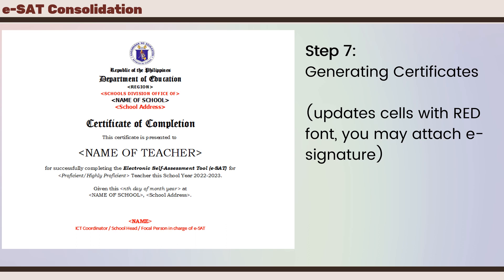The next step is to generate the certificates. If you did not click Yes earlier on the home screen for auto-generation, you can go back to do so. But remember, we have to update first the cells with red font. You can also attach an e-signature. The items to update include the school's division office, school address, name of the signatory, and their designation.